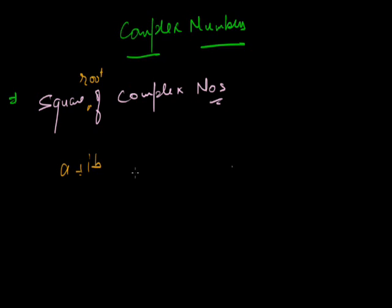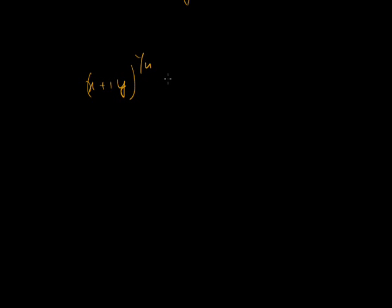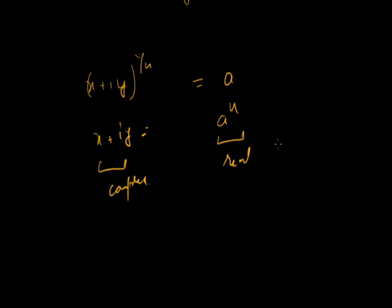I have a complex number — say a plus iota b. The square root of a plus iota b is obviously a complex number. If x plus iota y raised to the power 1 by n is a real number a, then x plus iota y equals a raised to power n, which is a real number — but x plus iota y is complex. That's a contradiction. So any root of a complex number is again a complex number.